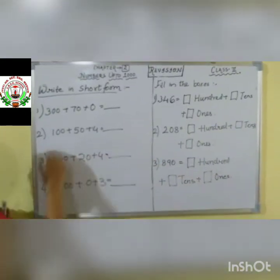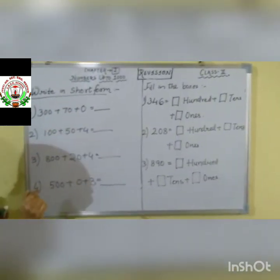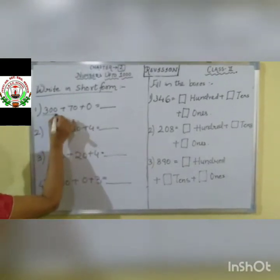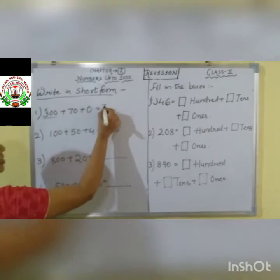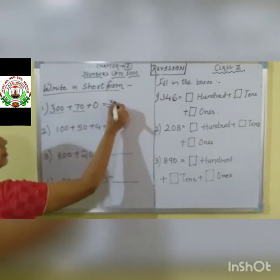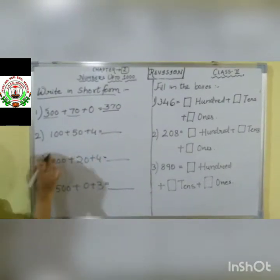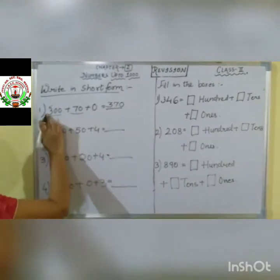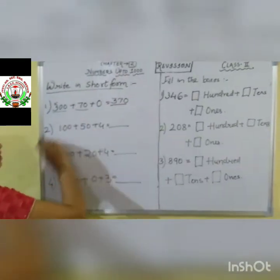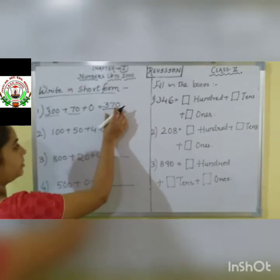So you will see our next question here: write in short form. That means the expanded form is already given to you. You have to write down the number in short form. See, first what is given? 300 + 70 + 0. Write down the first number: 3 for the 100's place. Then 70 — take the 10's place digit: 7. Then the ones place: zero is given, so write down directly zero. Our answer is 370.